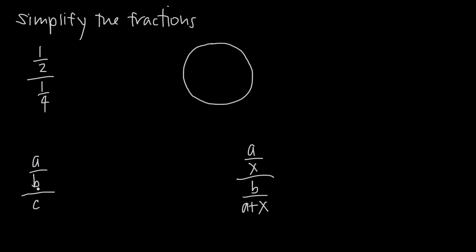Before we get to examples with letters or variables involved, I want to refresh on just a real number example. So in this first example here, we have 1/2 divided by 1/4. So we have a fraction divided by a fraction — really three fractions here: the entire fraction, then within the numerator another fraction, and within the denominator another fraction. And we're trying to find out what happens when we divide 1/2 by 1/4.